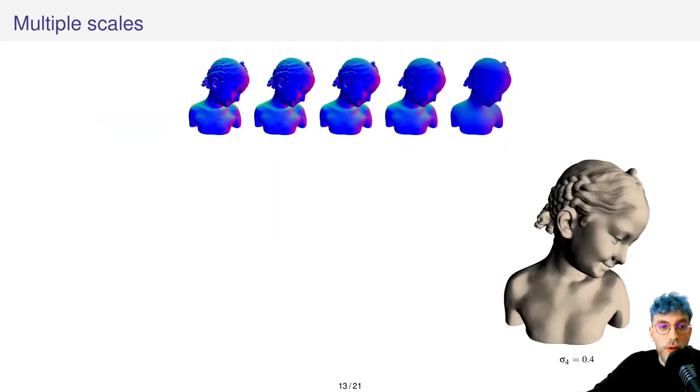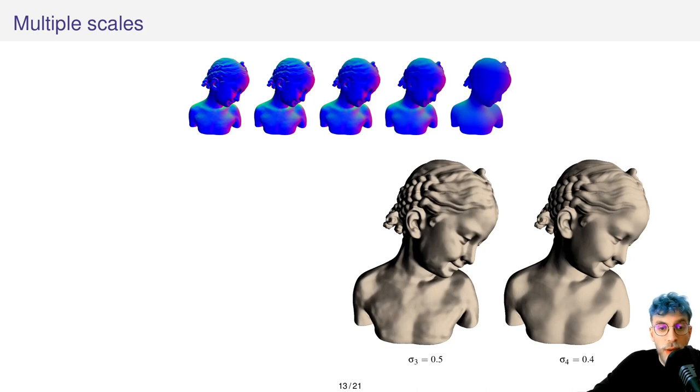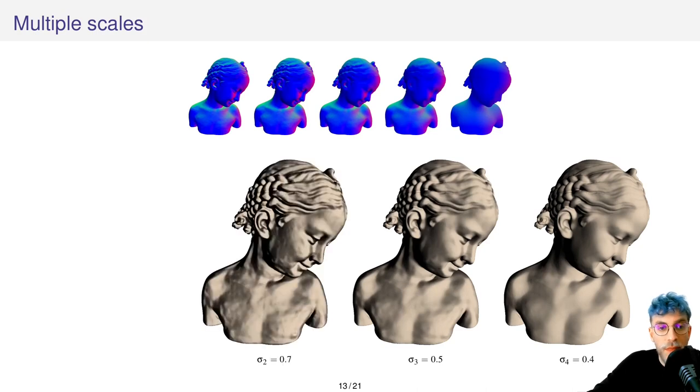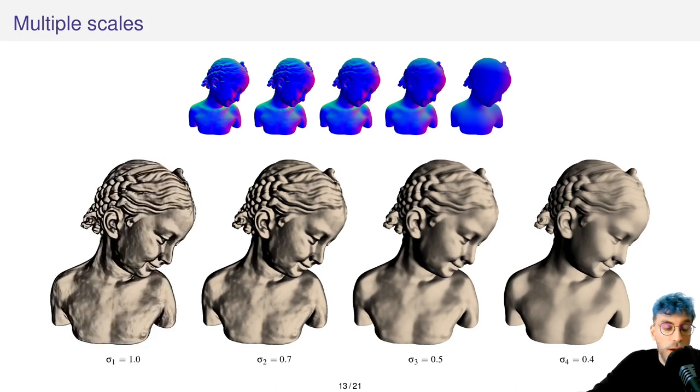Here is the result of such an accumulation of enhancements. Here we enhance the coarsest scale, scale 4, with a sigma of 0.4. Here we enhance scale 3 with a sigma of 0.5. Scale 2 with a sigma of 0.7. And the final scale, scale 1, with a sigma of 1.